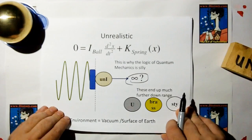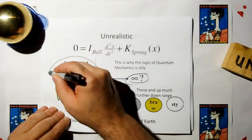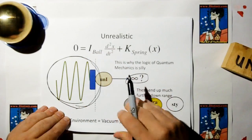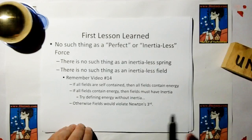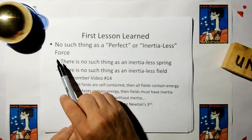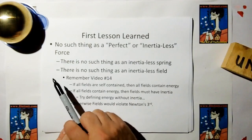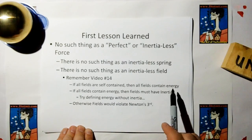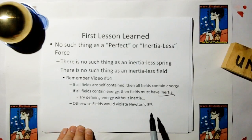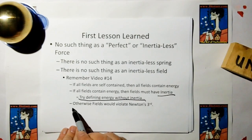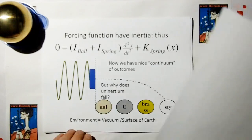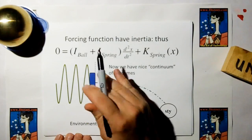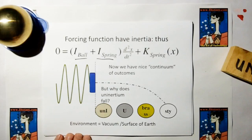That's why quantum mechanics is silly. In real life, we cannot ignore the fact that the forcing function of something has inertia too. There is no such thing as a perfect or inertialess force. There is no such thing as an inertialess spring. There is no such thing as an inertialess field. Remember video 14: if all fields are self-contained, then all fields contain energy. If all fields contain energy, then fields must have inertia — try defining energy without inertia. Otherwise, fields would violate Newton's third law. So if we consider the mass of the spring as well, we have no problem.